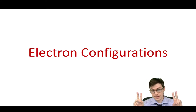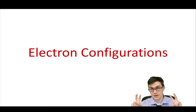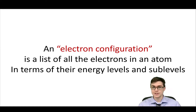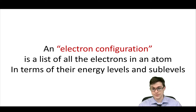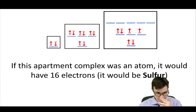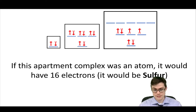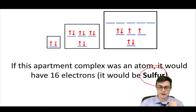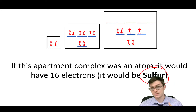So now I'm going to teach you about the electron configuration, which is the real point of this whole lecture series. An electron configuration is basically a list of every electron in an atom and where they are in terms of their energy levels and sub-levels. So if this apartment complex was an atom, it would have 16 electrons — and the neutral atom with 16 electrons is sulfur. I'm going to give you the electron configuration for sulfur.